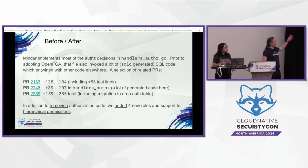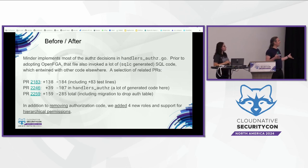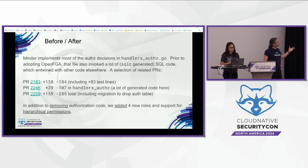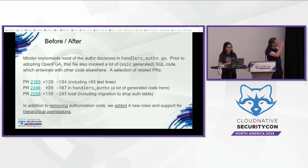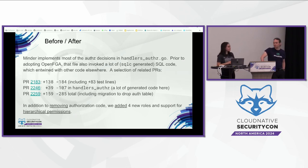The line counts may not seem like a lot, but we went from a model that basically just had owners to a model with five total roles and hierarchical permissions so we could have enclosing projects that contain other projects. All together, we ended up with half the code and substantially less entangling. There was less code but more capability.